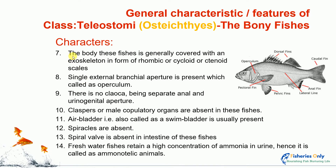Seventh character: the body of these fishes is generally covered with an exoskeleton in the form of rhombic, cycloid, or ctenoid scales. The body is covered with scales of rhombic, cycloid, or ctenoid type, which constitute the exoskeleton — the skeleton present on the outside of the body.